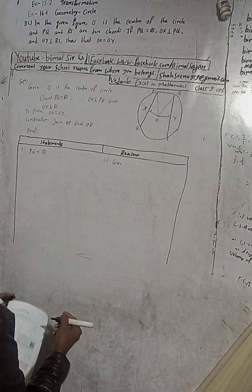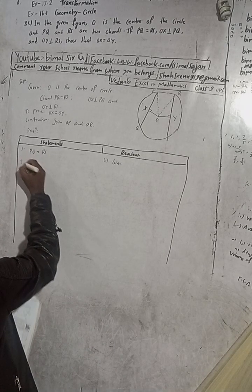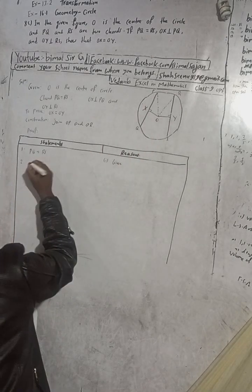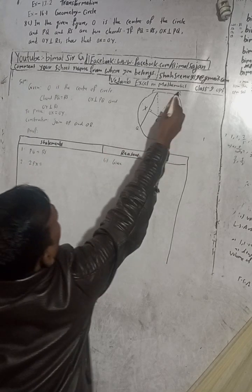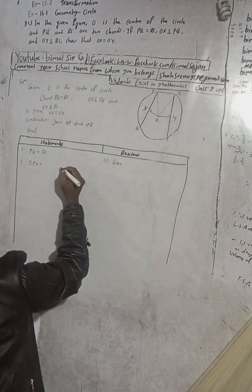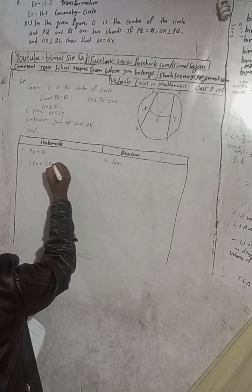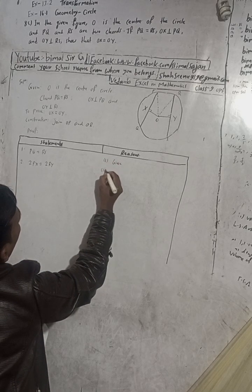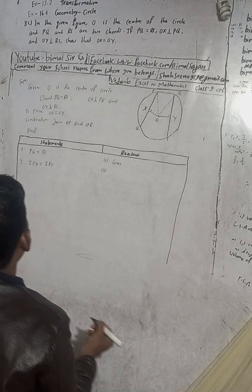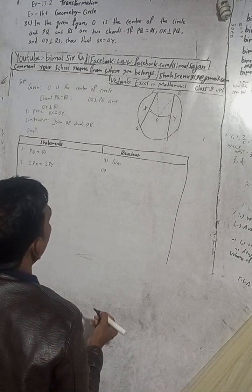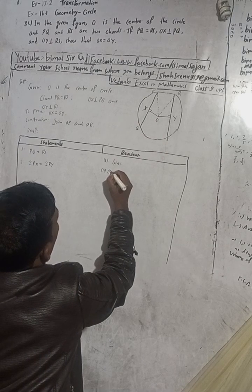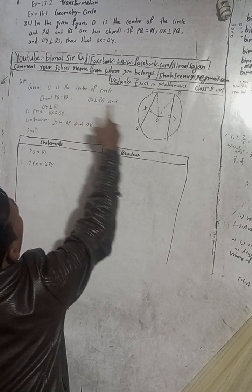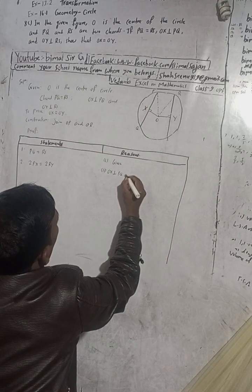Chords are equal. Number 2: In place of PQ we can write 2PX, so 2PX is equal to RS, which equals 2RY. The reason for this is that OX is perpendicular to PQ — the perpendicular from the center bisects the chord.